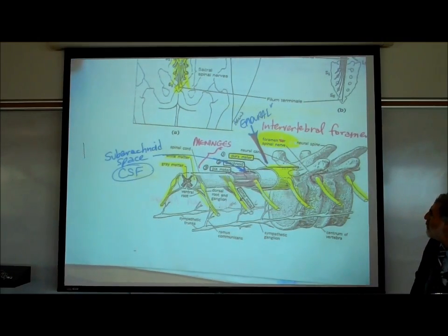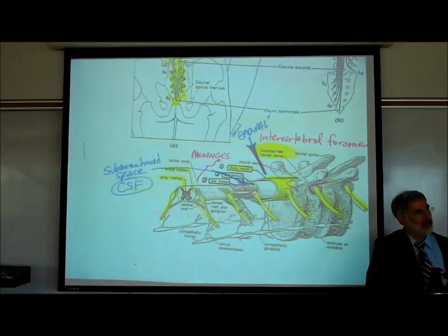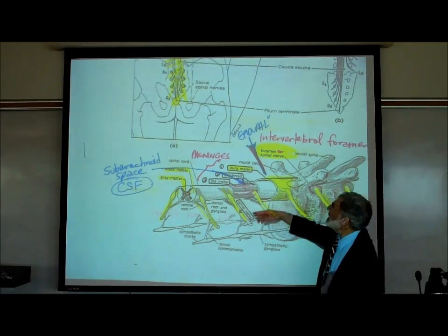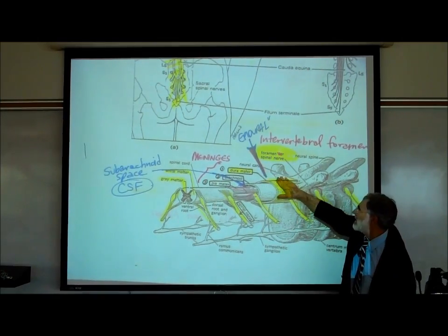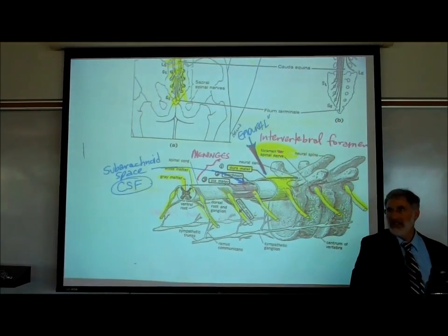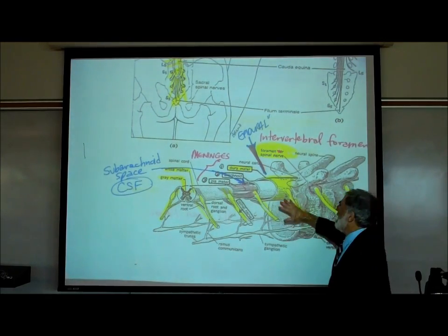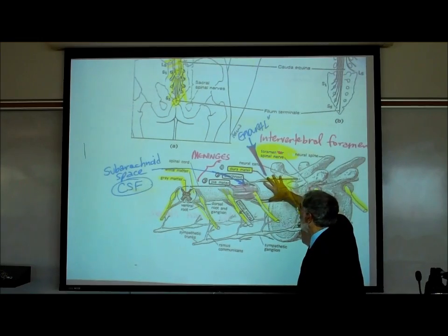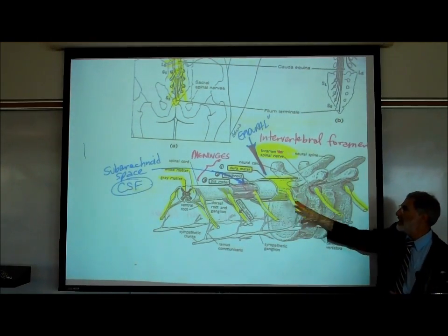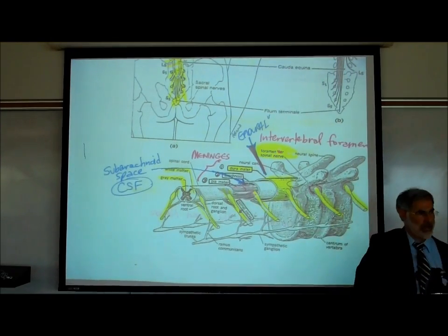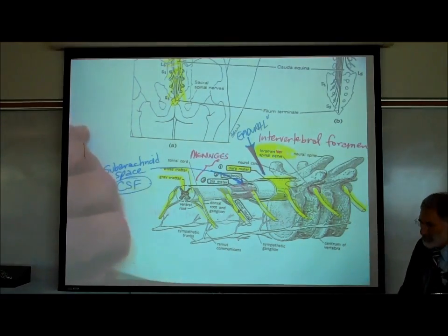You've heard the term epidural because women have an epidural during childbirth. What they do is release a local anesthetic just outside the dura mater membrane. That's where the local anesthetic is injected, and that's going to cause a numbing or loss of sensation of all the spinal nerves in this area. It's called an epidural because that's called the epidural space.